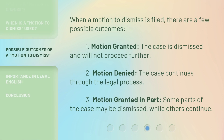When a motion to dismiss is filed, there are a few possible outcomes. First, motion granted — the case is dismissed and will not proceed further. Second, motion denied — the case continues through the legal process. Third, motion granted in part — some parts of the case may be dismissed while others continue.